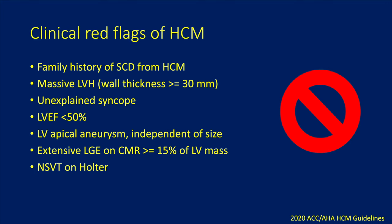The clinical red flags of HCM that people should pay attention to — both in clinic and when we do echoes — are clinical features that increase the risk of sudden cardiac death: family history of sudden cardiac death, massive LVH defined by wall thickness more than 30 millimeters, unexplained syncope, any LV dysfunction with EF less than 50%, presence of apical aneurysm independent of size, excessive fibrosis on MRI quantified by more than 50% of LV mass showing LGE, and NSVT on Holter. All of these are high-risk features clinically and on imaging that increase risk for sudden cardiac death.